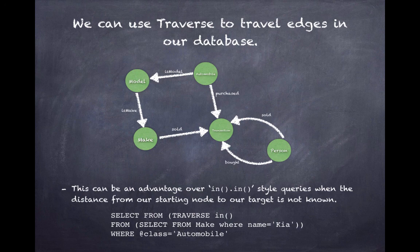The code in this slide will return the same result set as found earlier, specifically which vehicles in our database are KIAs. It says select from traverse in from select from make where name is KIA, where class is automobile.